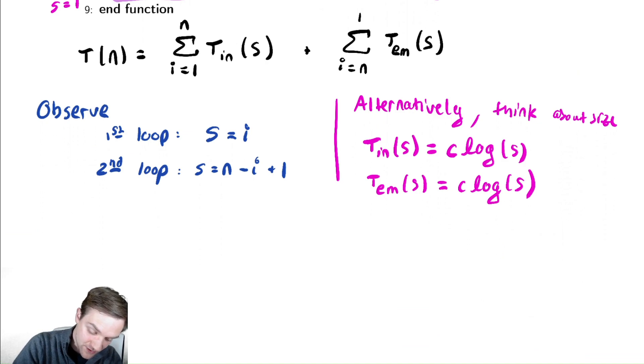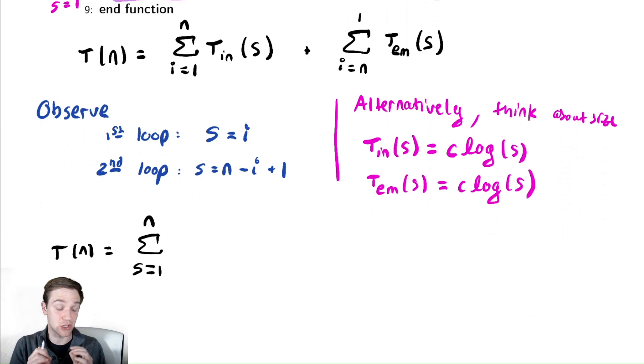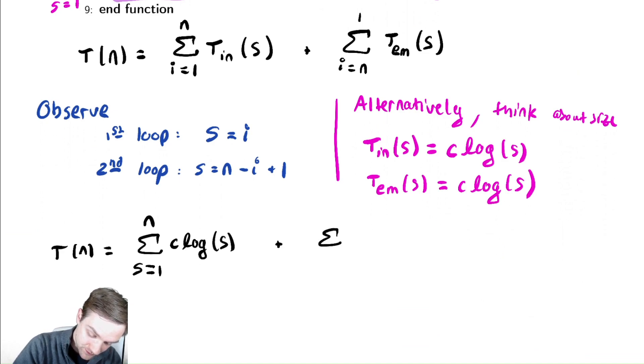So, this means I can express t of n as the sum from s equals 1 to n where I'm now reconceptualizing this in terms of the sizes and not the indices. And then the cost of that loop is c times log of s plus the sum from s equals n down to 1 of c times log of s.